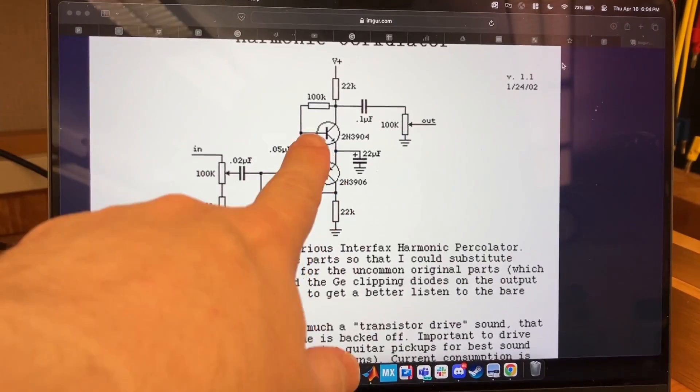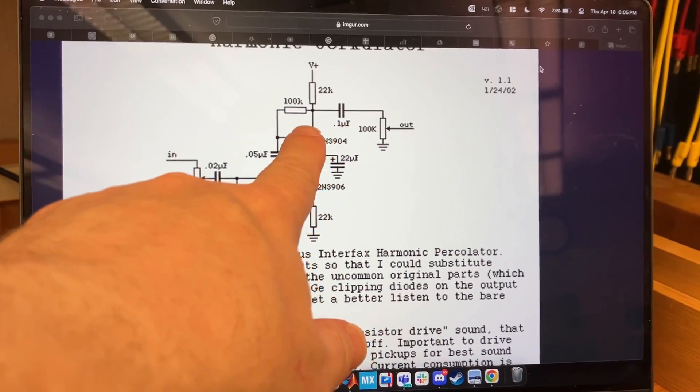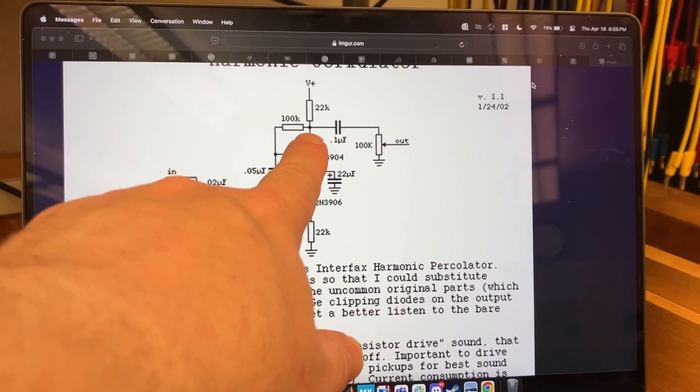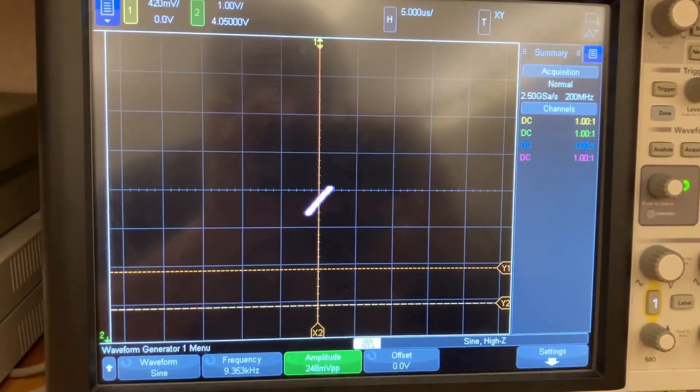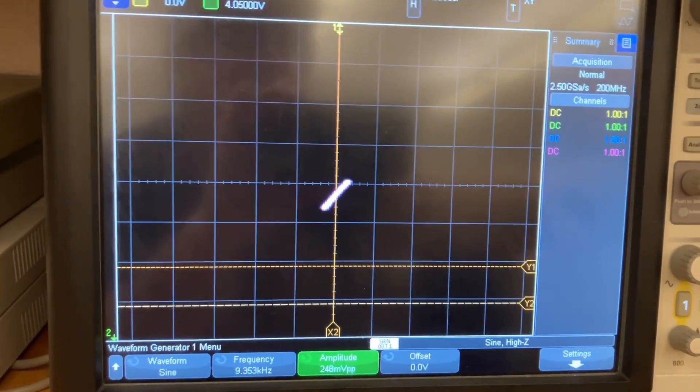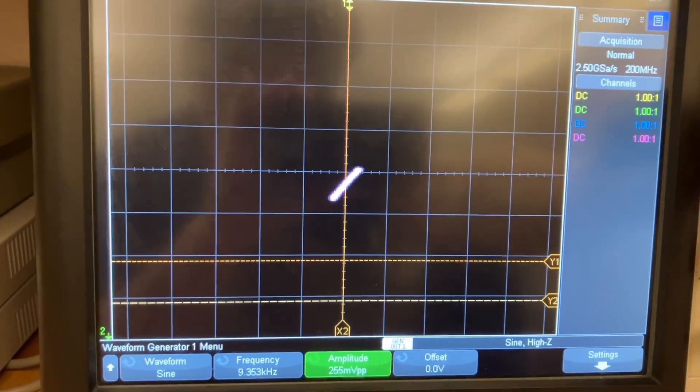Okay, now we're probing the output on this side of the DC blocking cap at the output. So this will have the DC bias on it. But maybe we'll see less hysteresis. So I'm at 200-something millivolts now. Let me start cranking that.